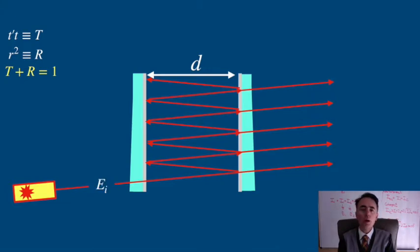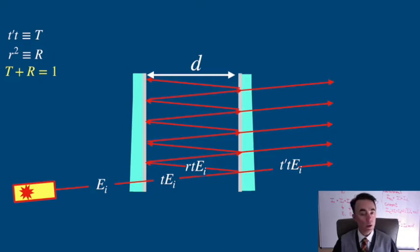We call E sub i to the incident amplitude of the electric field. The amplitude transmitted into the interferometer will then be T times E sub i. In reaching the second surface, light will be reflected as R times T E sub i and light will be transmitted as T prime times T E sub i.